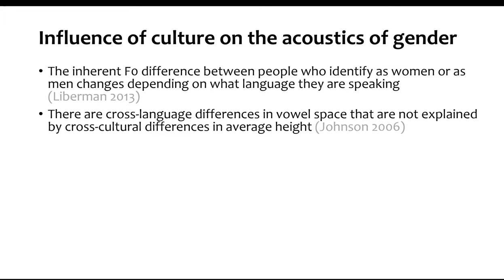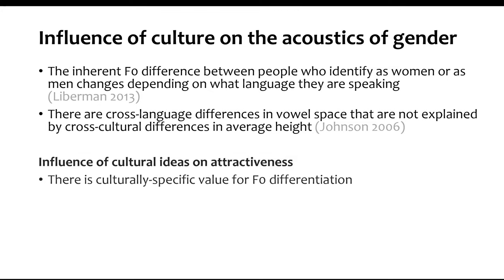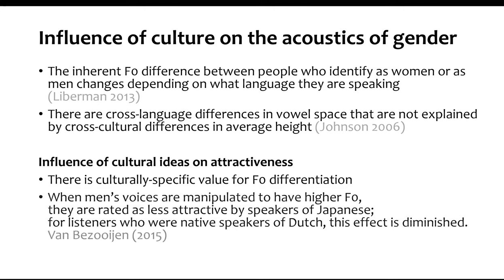Even differences in vowel space don't appear to be related to cross-cultural differences in average height — so if people from one region tend to be larger, that doesn't explain all the variability in vowel space. There seems to be something intentionally controlled. There are also differences in how voice acoustics affect perceived attractiveness: in a study with Japanese and Dutch speakers, raising a man's F0 had a big impact on perceived attractiveness for Japanese listeners, but not much effect for Dutch listeners.